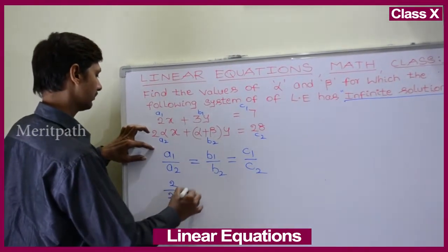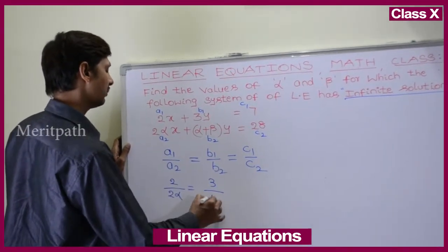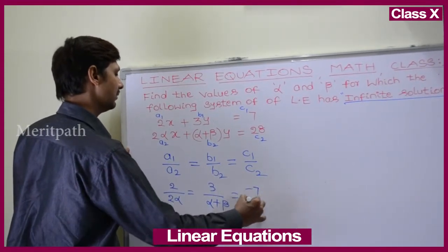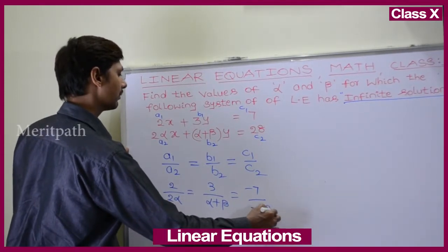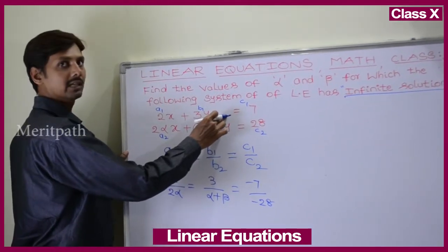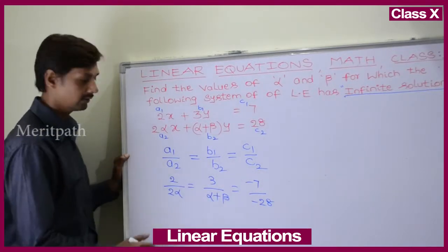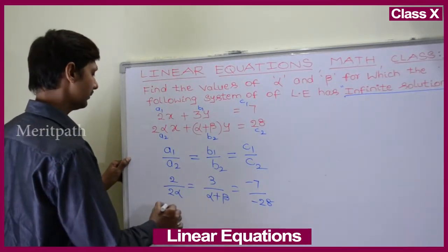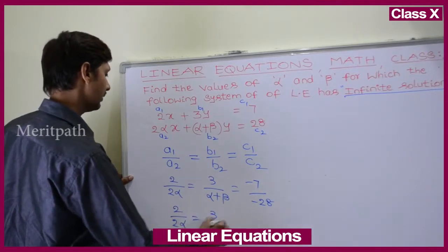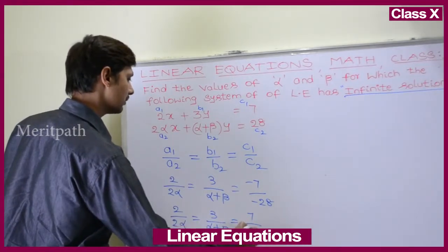a1 is 2, divided by a2 which is 2 alpha; b1 is 3 and b2 is alpha plus beta; c1 is minus 7 and c2 is minus 28. After simplification, the negatives cancel and we get: 2 by 2 alpha equals 3 by alpha plus beta equals 7 by 28.